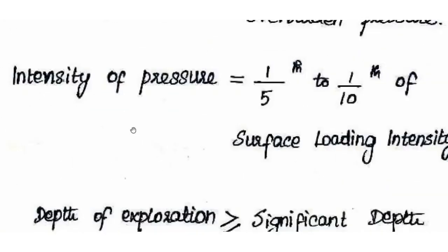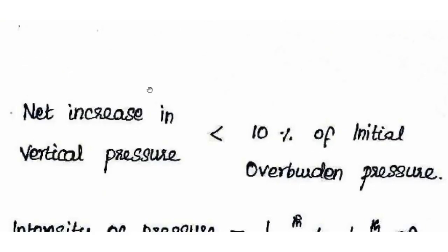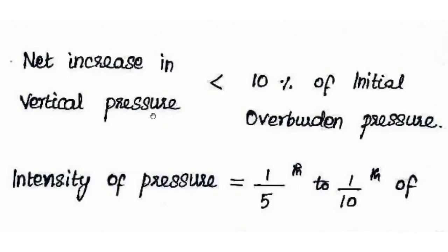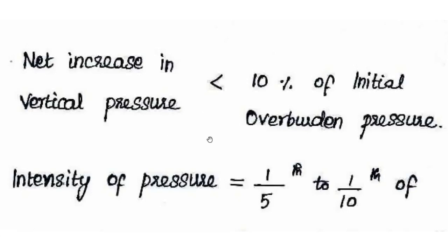Let's look at the significant depth of exploration. The depth of exploration should always be greater than or equal to the significant depth of exploration. The net increase in vertical pressure — that is, the additional stress intensity — should be less than 10% of the initial overburden pressure.